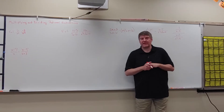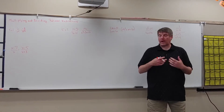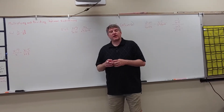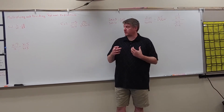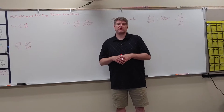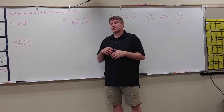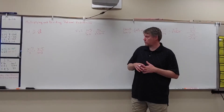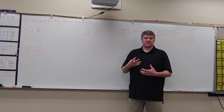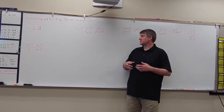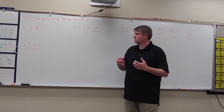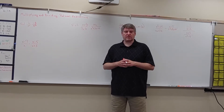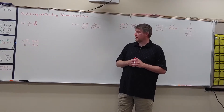We're going to talk about multiplying and dividing rational expressions. If you remember back to multiplying fractions, you're going to multiply straight across. You can multiply straight across and then simplify, or you can simplify and then multiply across. I will traditionally simplify first because it's easier. We still have to have our domain restrictions. And when you divide, remember, you're going to multiply by its reciprocal.